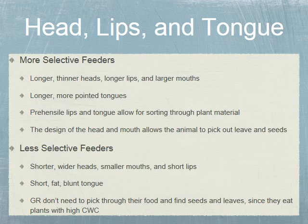Focusing on the head, lips, and tongue: the more selective feeders have longer and thinner heads, longer lips, and larger mouths. They have longer, more pointed tongues with prehensile lips and tongue allowing for sorting through plant material — picking out leaves and seeds. The less selective feeders like grazers have shorter and wider heads, smaller mouths, short lips, and short, fat, blunt tongues. Grazers don't need to pick through their food — they just eat plants that are high in cell wall components.